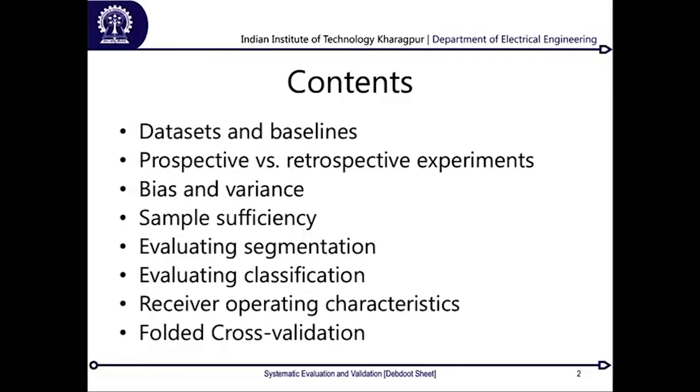The way this lecture is organized: I will initially speak about what is a dataset and what are baselines, then about retrospective versus prospective experiments and what they mean. We will also discuss the bias-variance problem and the bias-variance trade-off, which we often speak about in pattern recognition, machine learning, or computer vision tasks, and what it means for medical image analysis.